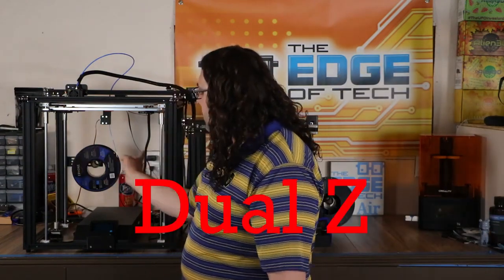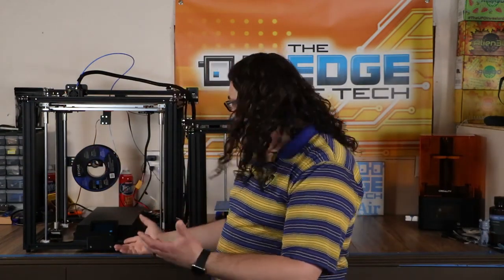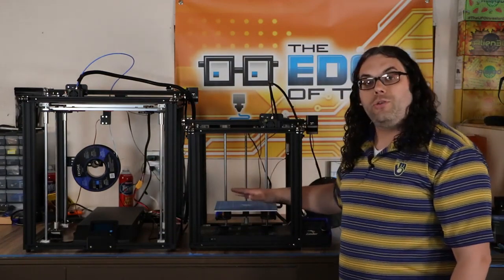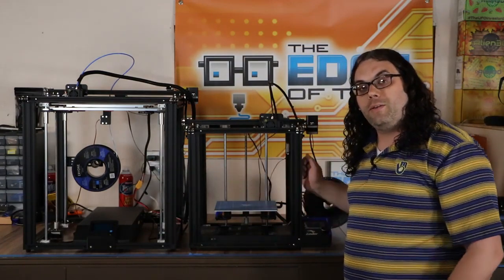The Ender 5 Plus actually comes with dual Z, one on each side, so it has drive motors on each side that help push that really big bed up and down. So that's something else that a lot of people really like is the dual Z on the Ender 5 Plus, but that being said, I've never had any issues with my Ender 5 with that single Z either.